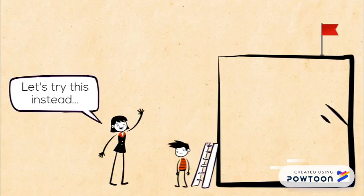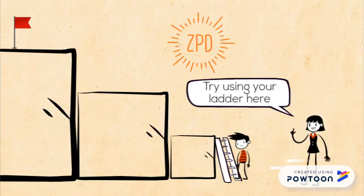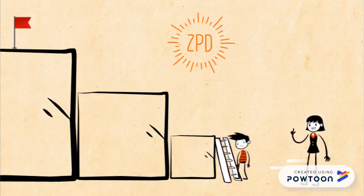Charlie's teacher steps in to help him find a way to reach his goal. With the help of his teacher, Charlie is given a new task that is more achievable based on his existing knowledge and her help.